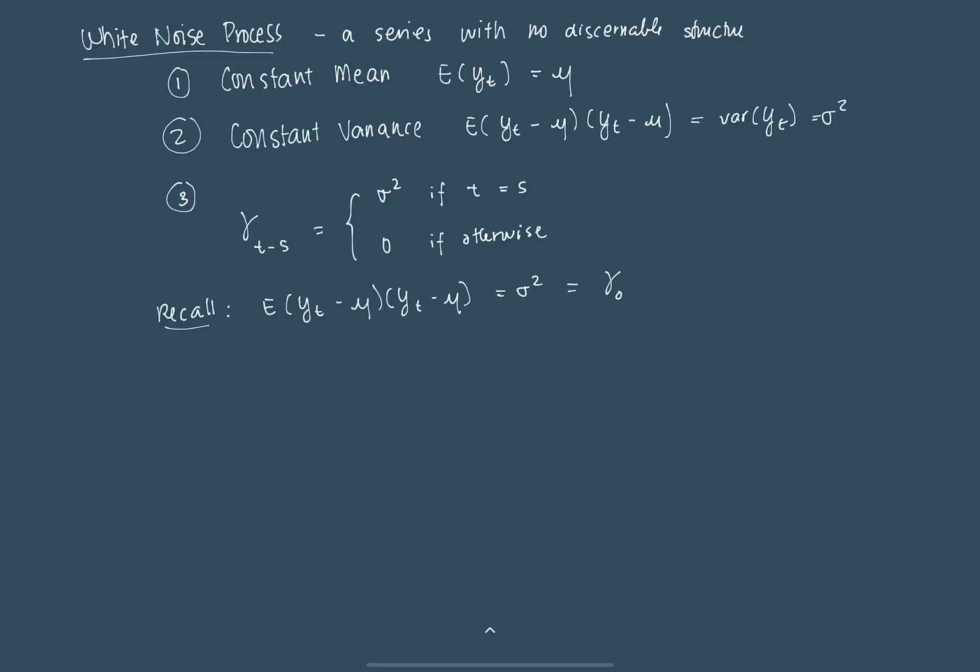So we permit that value of the autocovariance is equal to the variance when T is equal to S. But when T is not equal to S, in a white noise process, that gamma T minus S is just equal to 0. And that differs a bit from our assumptions. It sort of strengthens that assumption earlier.